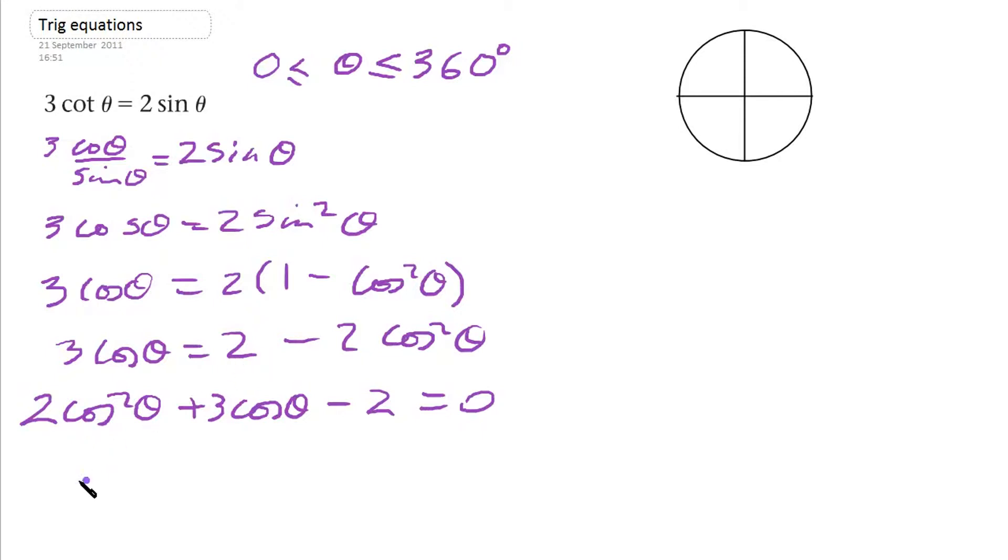Now let's see if we can factorize this. So what have we got? We have 2 cos theta over here, and a cos theta here.